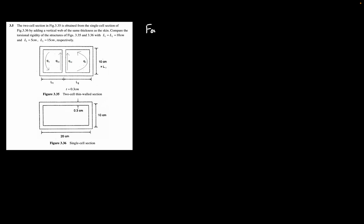We'll start with figure 3.36, the easier one. For A-bar, the area of the entire section, that is going to be L1 plus L2 times L3. In this case, L1 and L2 equal 10, so we have 20 centimeters, and L3 is 10 centimeters, giving an A-bar of 200 centimeters squared.